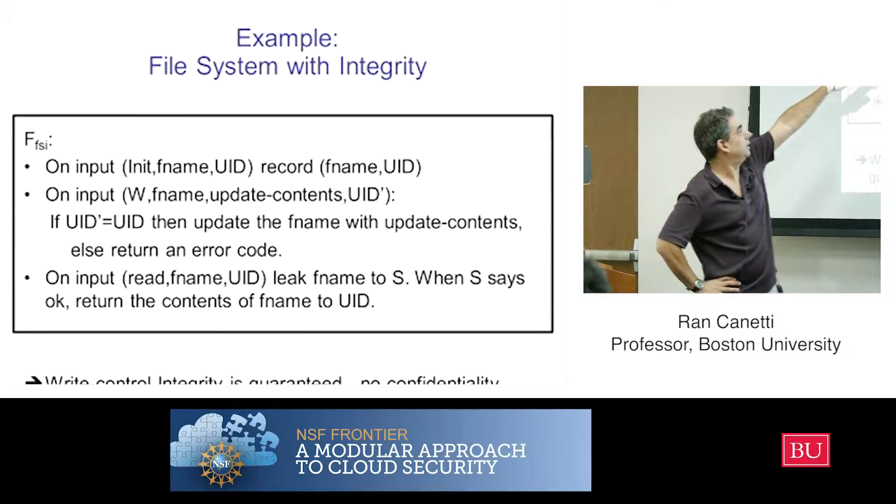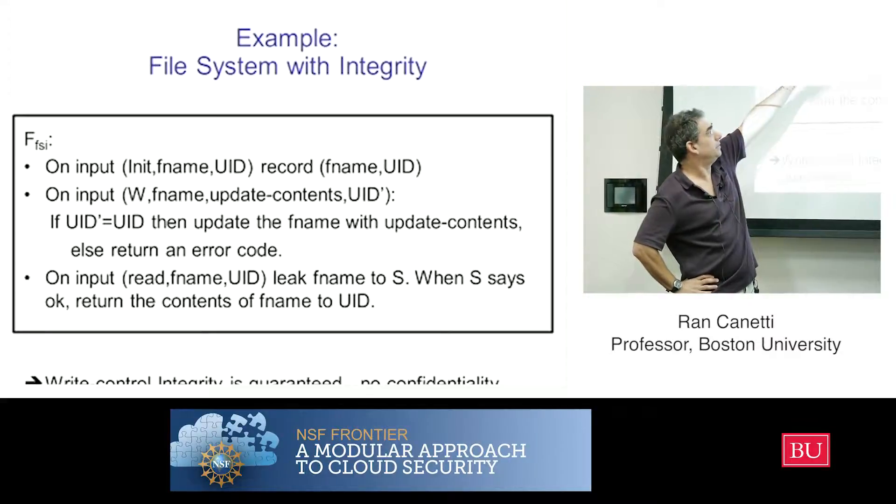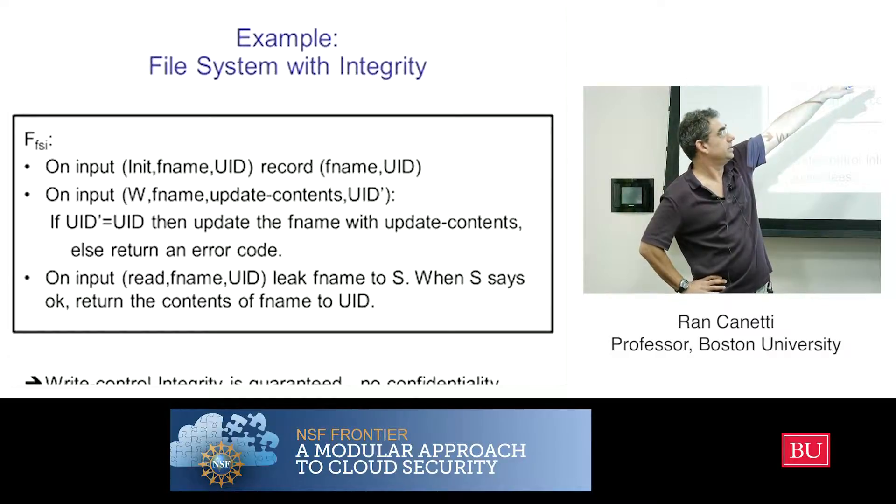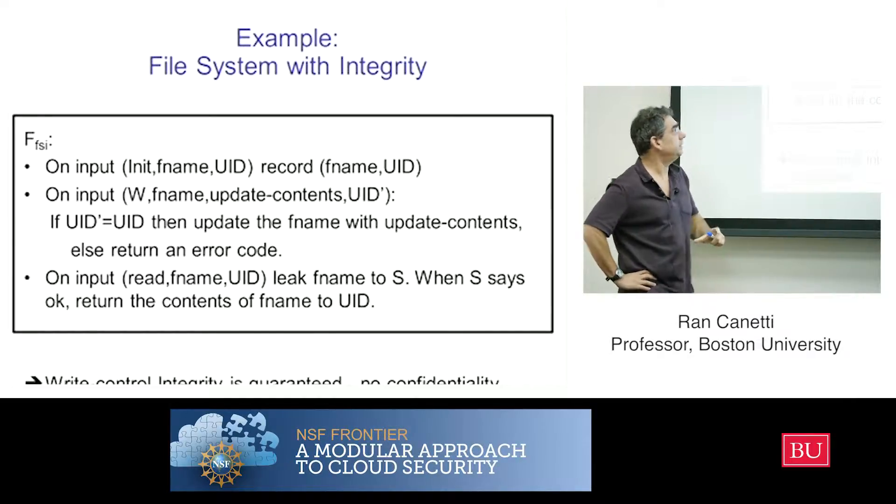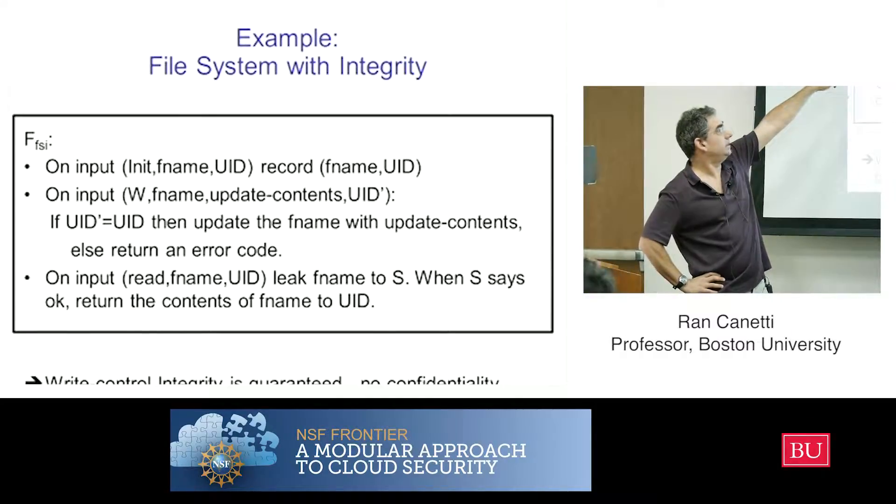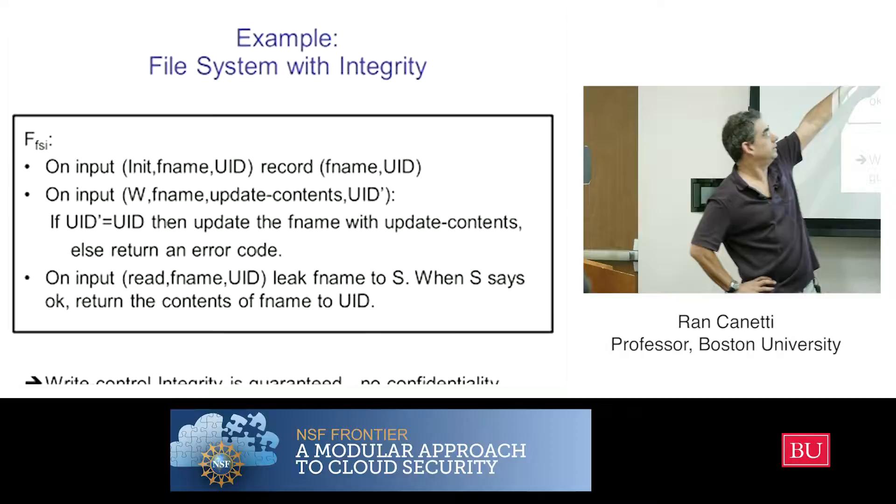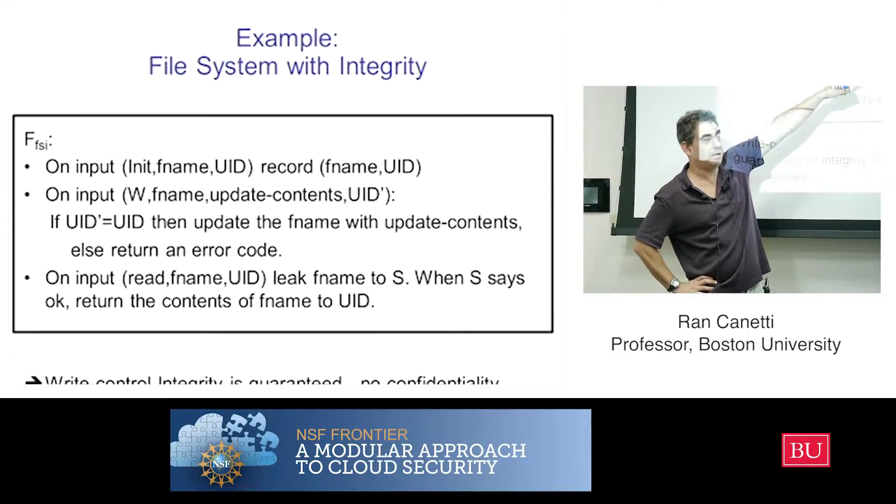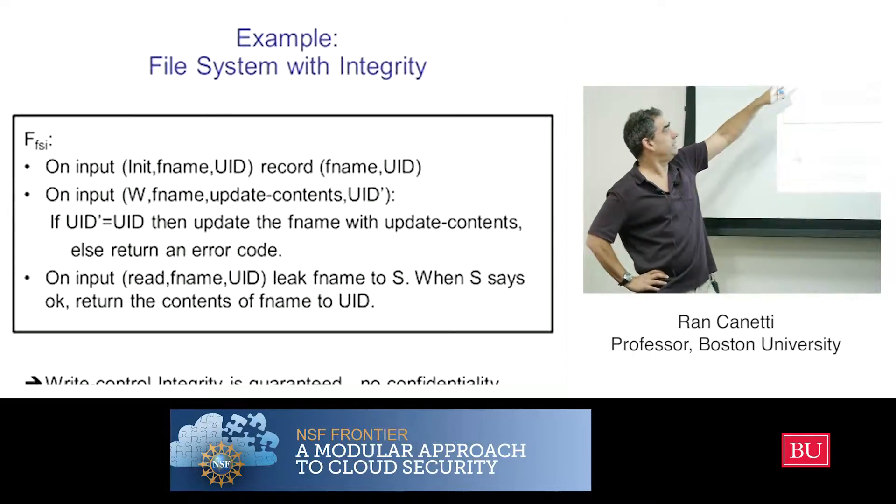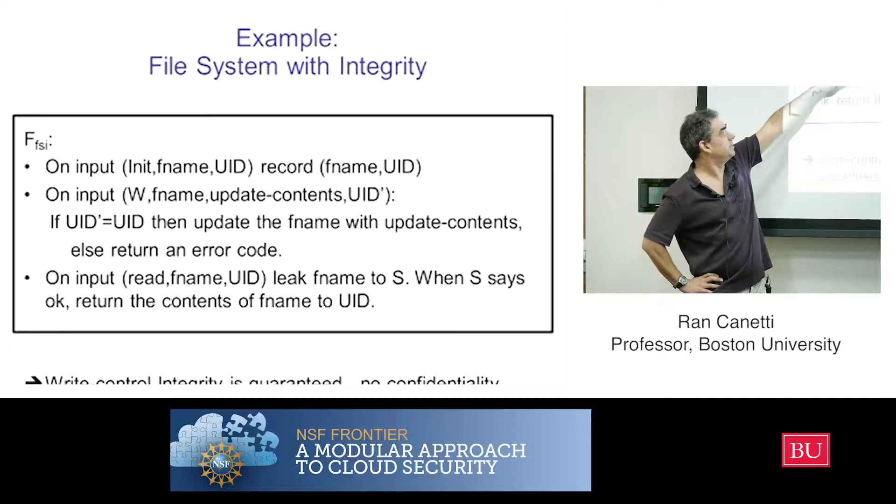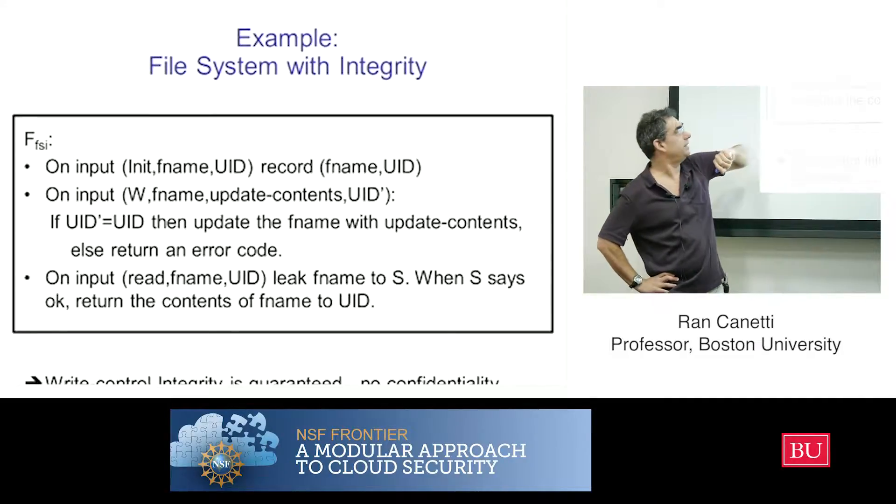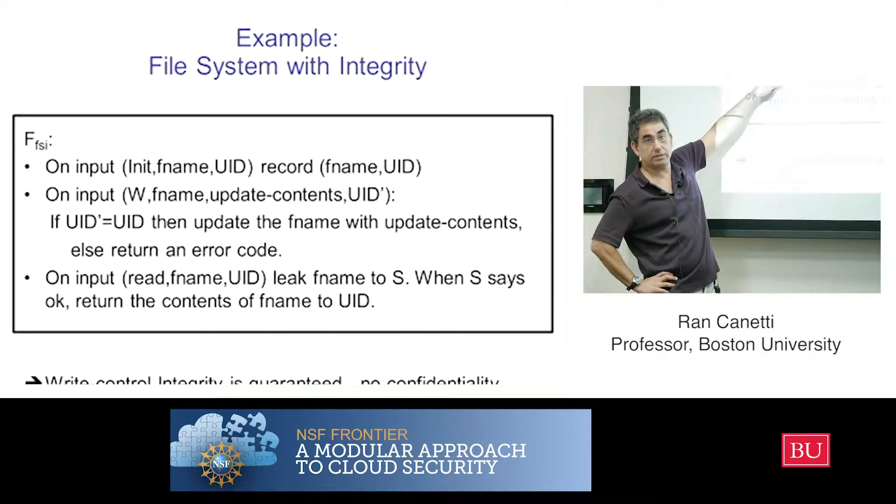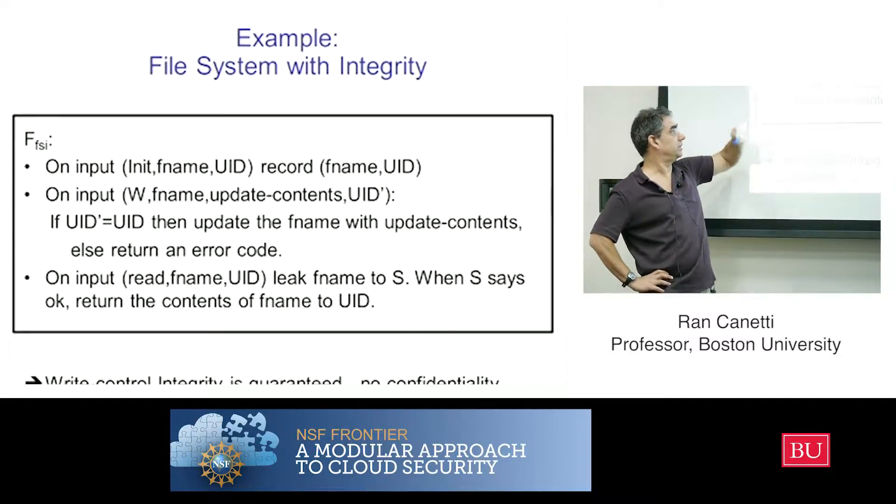So I input a filename with my identity, then the system or the ideal service records and associates this filename with my identity. And when I ask the system to write to the filename with some update contents, with some UID, then if this UID prime equals UID, where UID is the UID that's in the filename, then update correspondingly. Else I'm going to return an error code.